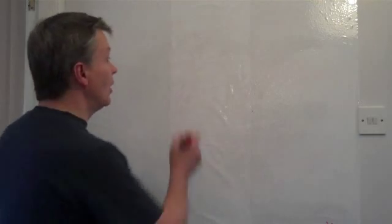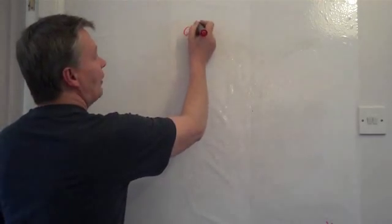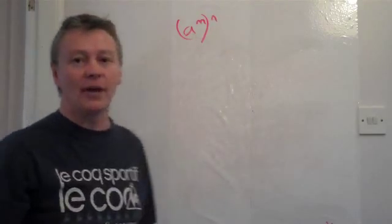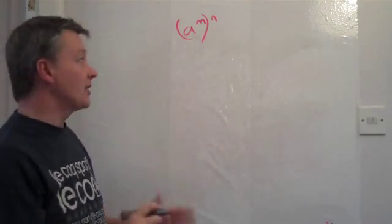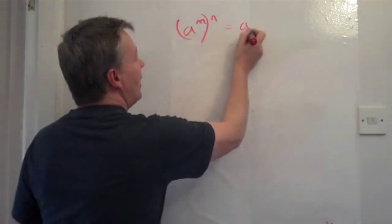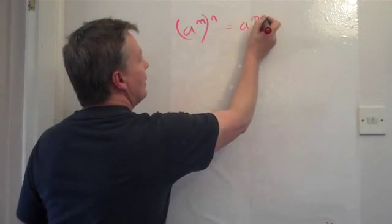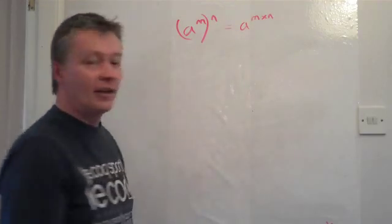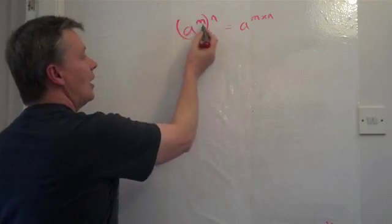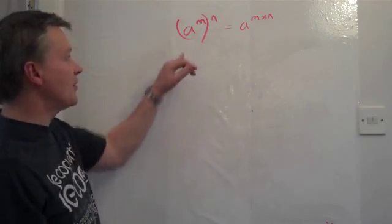The first one is this rule, which is a to the power of m in brackets multiplied to the power of n. Now that's exactly the same according to the laws as a^(m×n). And the way that works is that if I've got a number in here, it's a's for any number.